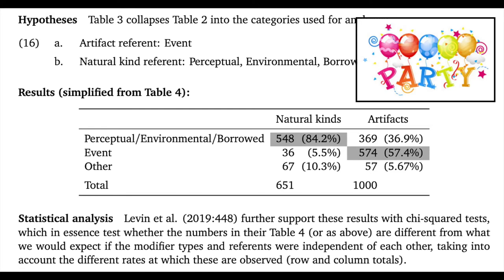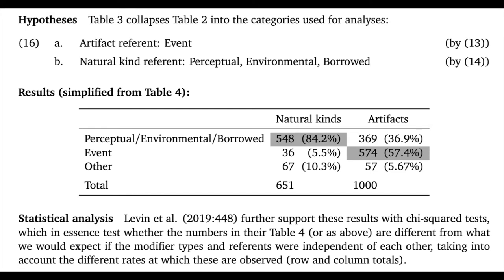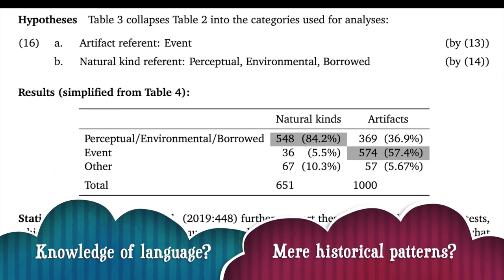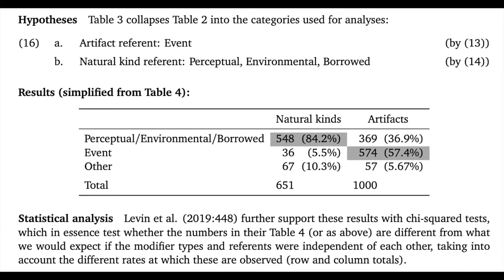Taking stock, we have strong corpus evidence that seems to validate our core hypotheses at a descriptive level. However, we don't really know what's shaping these results yet — is it knowledge of language or just an emergent pattern from the way things tend to be named similarly to other things? To try to distinguish these two hypotheses, we need to move beyond observational data and see what people do when they have to produce or interpret novel compounds. That will help us see whether the hypotheses generalize to new cases in ways that suggest an underlying capacity we all have as users of the language.